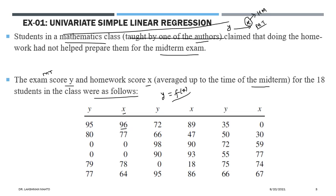We try to see the dependency of y (midterm score) on x (homework score). We try to learn a function f expressing this dependency using a linear approach: f(x) = ω₀ + ω₁x. This is a linear function in the parameters, and it is simple because there is only one attribute — the average homework score.